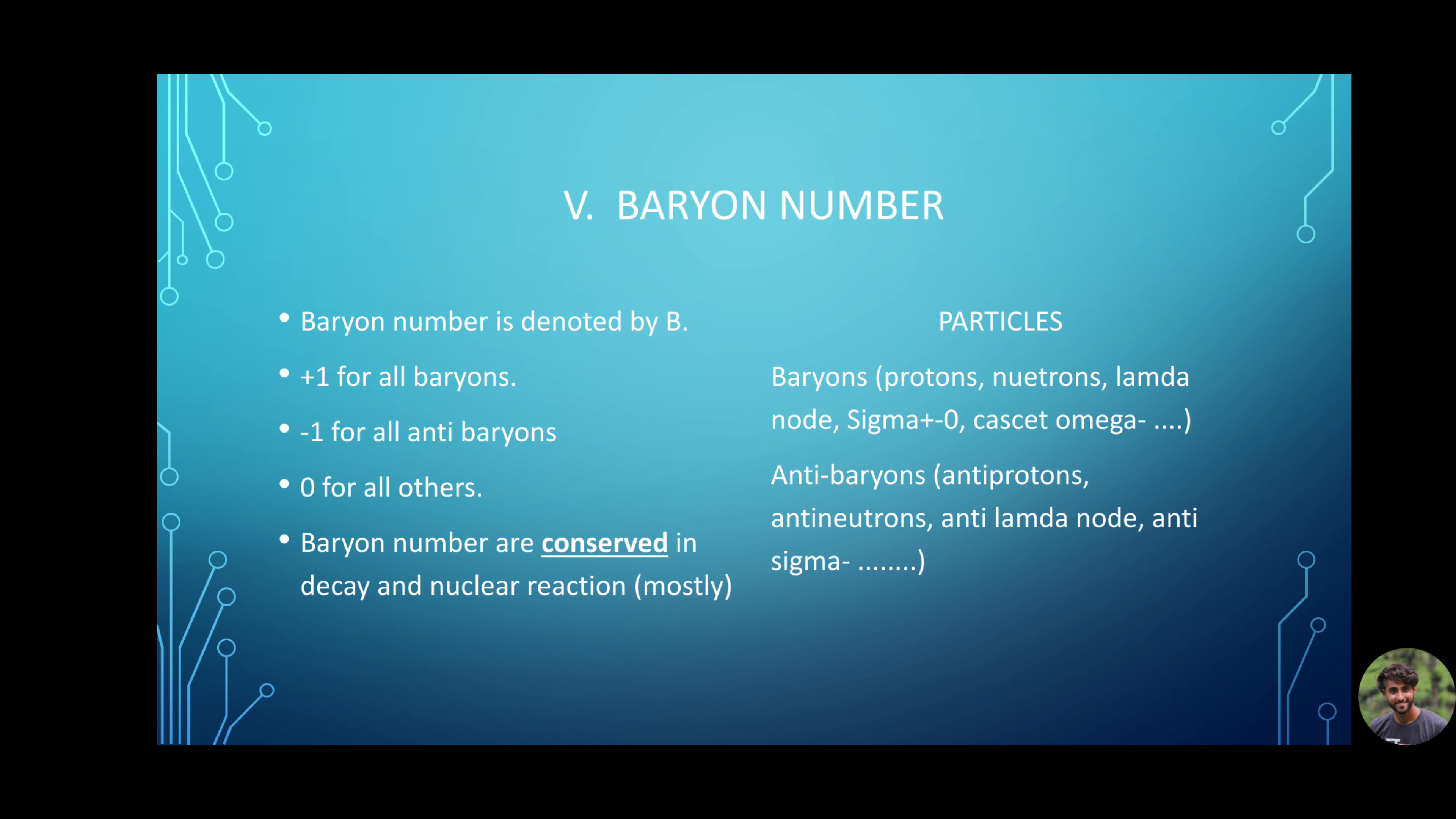Fifth, baryon number. If you remember from the previous videos, baryon was made up of odd number of valence quarks. Similar to lepton number, baryon number can be positive 1, zero or negative 1. Positive 1 when we have a baryon. That is proton, neutron, lambda-0, sigma-minus, sigma-plus, sigma-0, xi, omega-minus, etc. Baryon number is negative 1 when we have an anti-baryon. That is anti-proton, anti-neutron, anti-lambda-0, anti-sigma-minus, etc. And zero when none of these. If you want to know more about baryons, click on the right top corner. Now, baryon number is always conserved in decay processes and nuclear reactions.